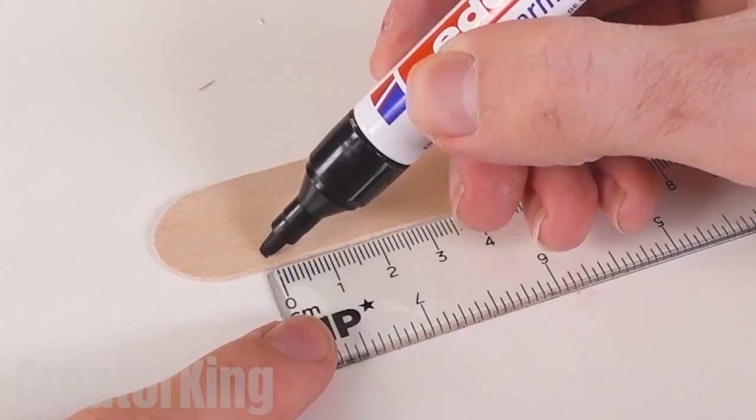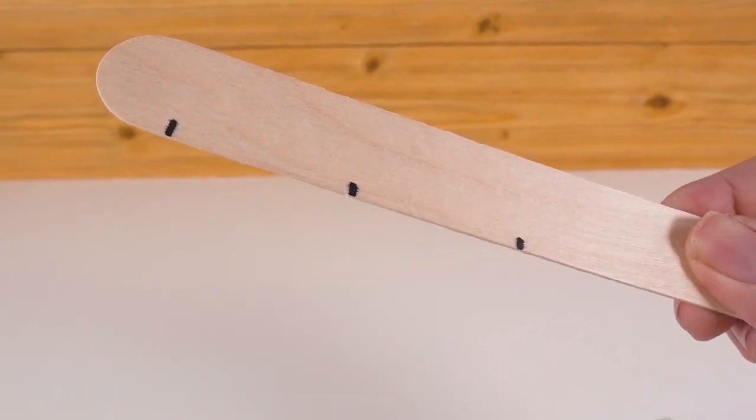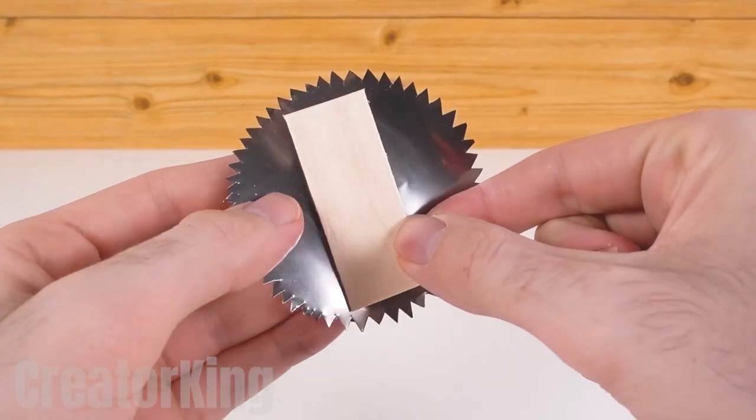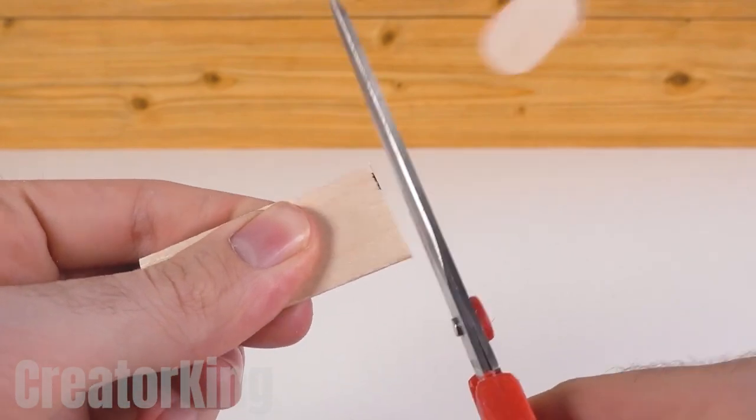The time has come to use the popsicle sticks, ladies and gentlemen. Take one of them and mark from the beginning up to 8 cm. Let's also mark half of this measurement, in other words 4 cm. With a pair of scissors, cut it out and put it on the saw to help us measure and cut the second piece we'll need.